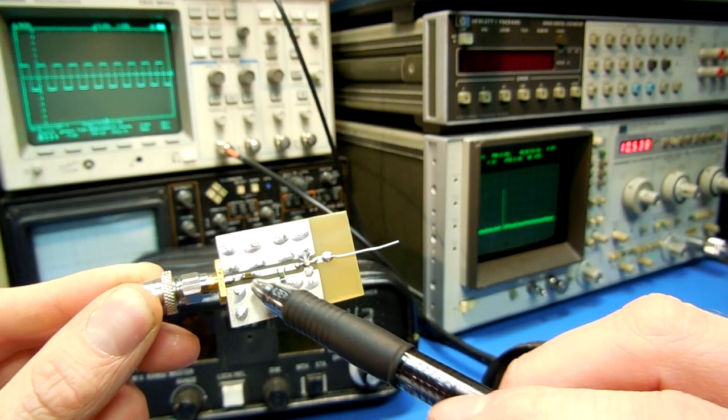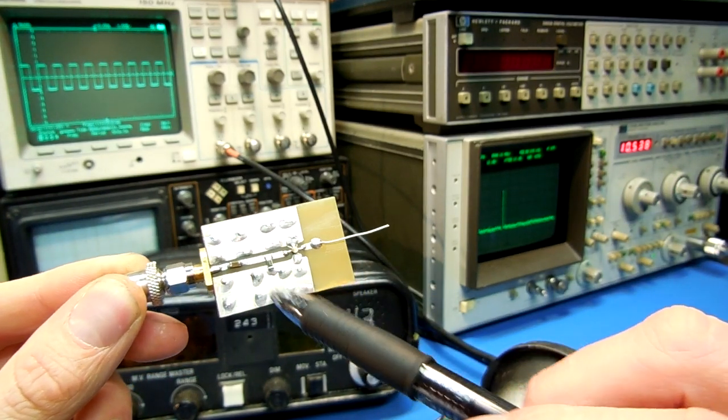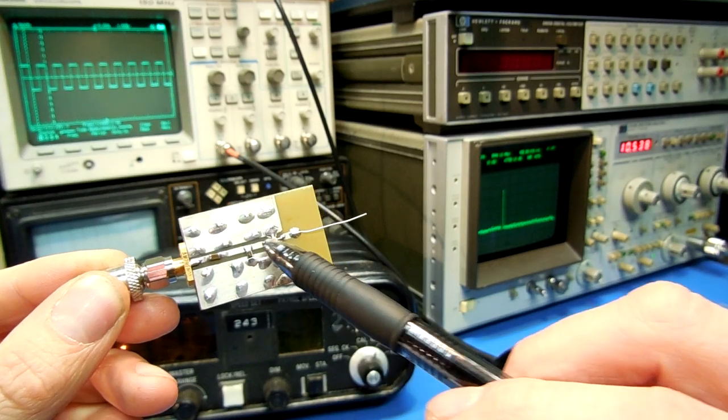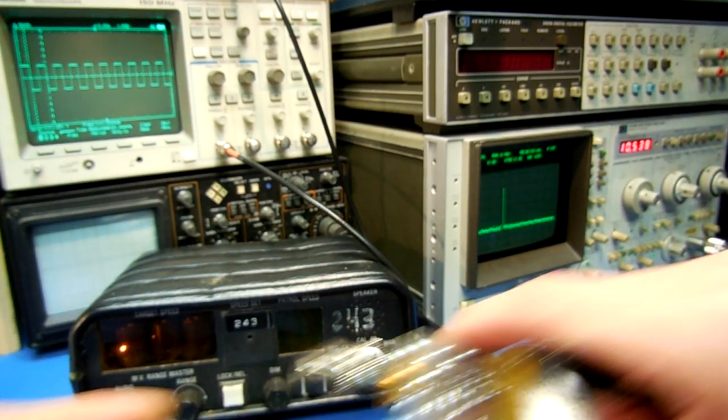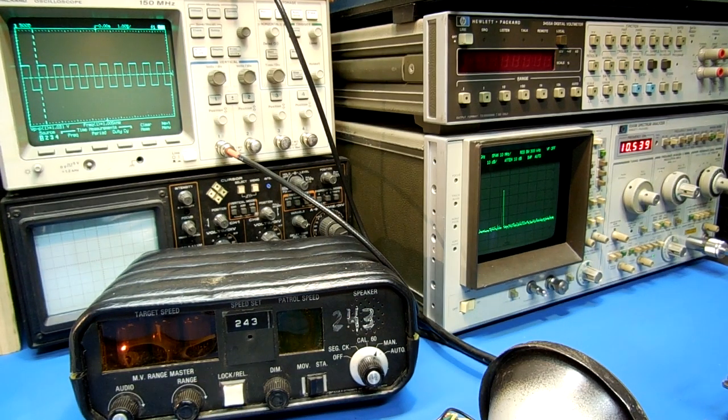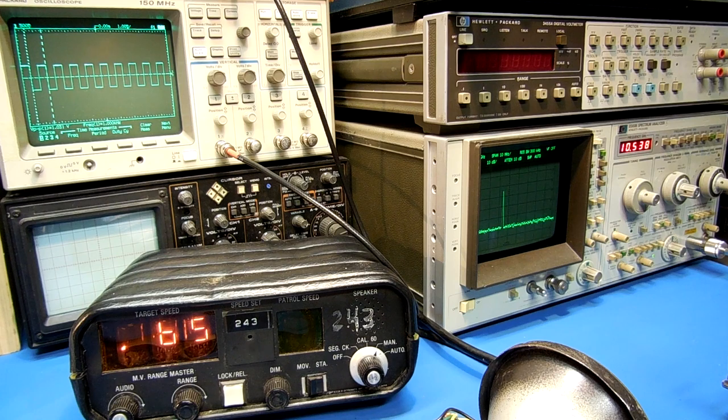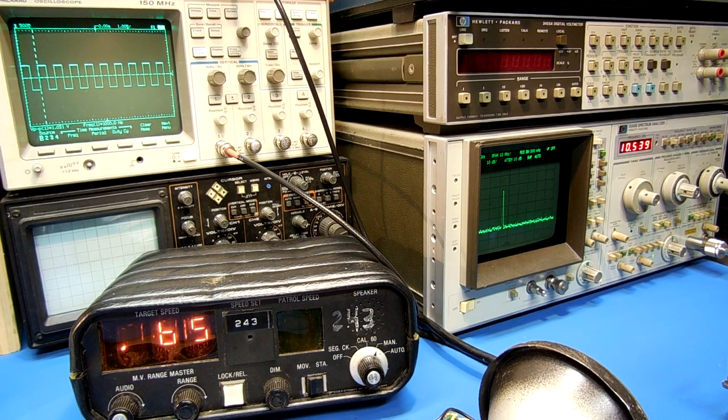I have a coupling capacitor .01 microfarad and a one meg gate to ground, just to drain off any residual stuff on the gate. On the oscilloscope screen, you're gonna see our modulating frequency. This experiment, it's a one kilohertz square wave at one volt peak to peak.